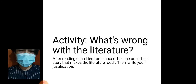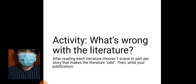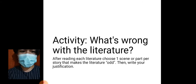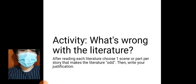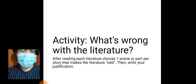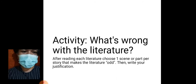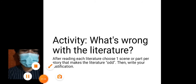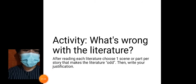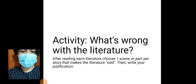I know some of you are quite confused with the word 'odd' — odd means different. But before that, let me read to you the activity: 'What's Wrong with the Literature?' It seems like you need to find a certain thing in the literature that makes it wrong. The direction says: after reading each literature, choose one scene or part per story that makes the literature odd, then write your justification.